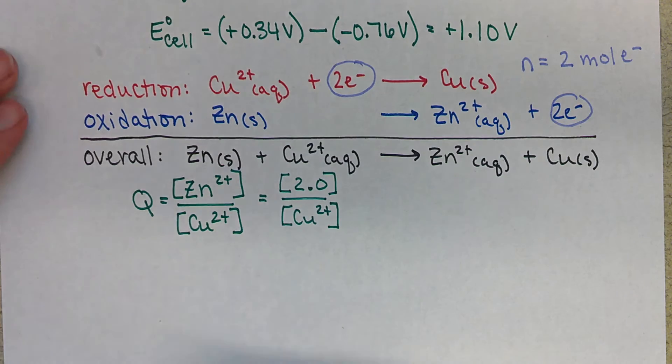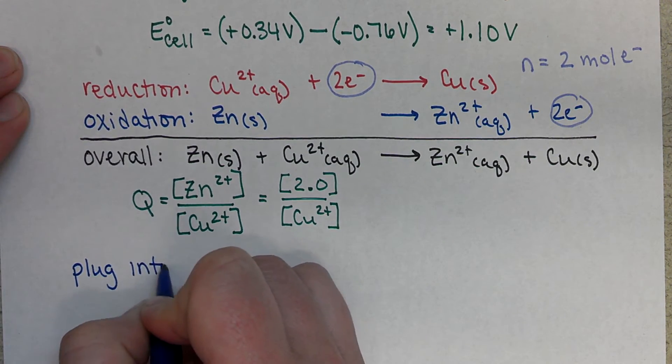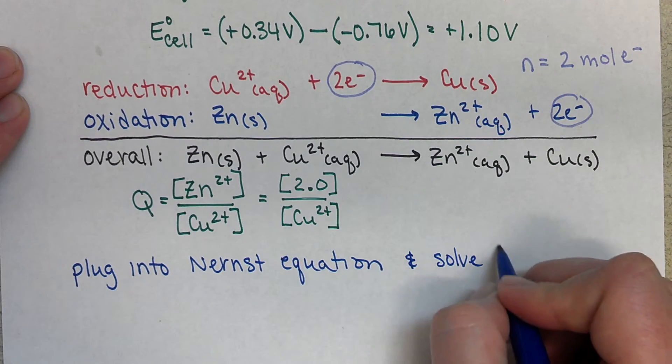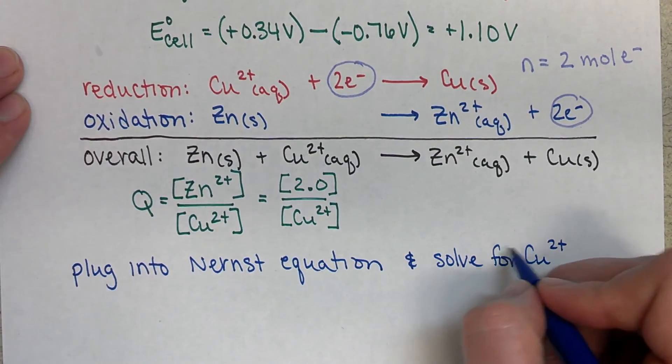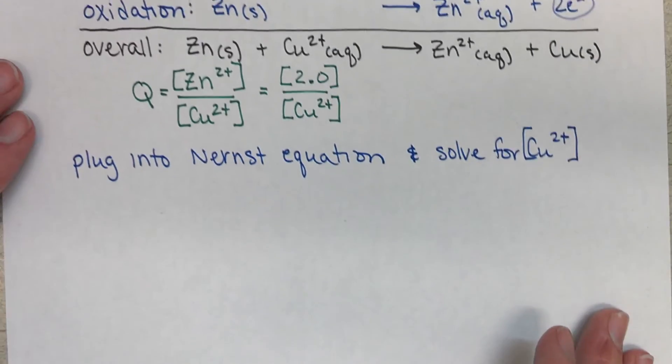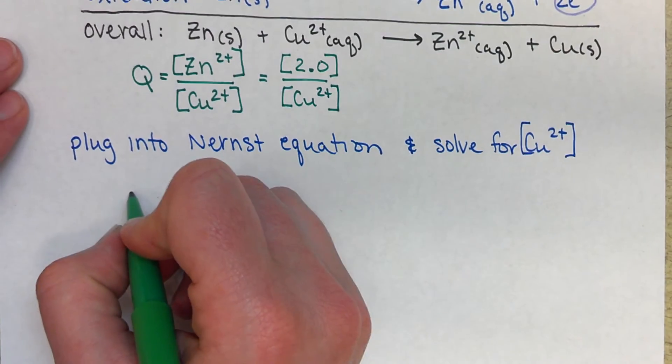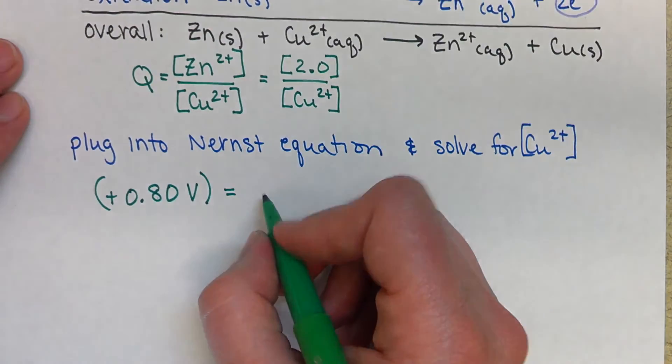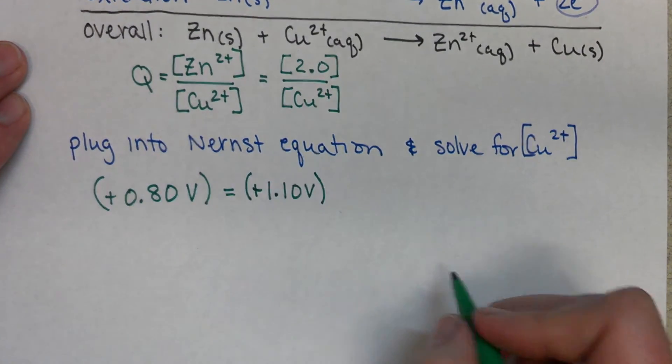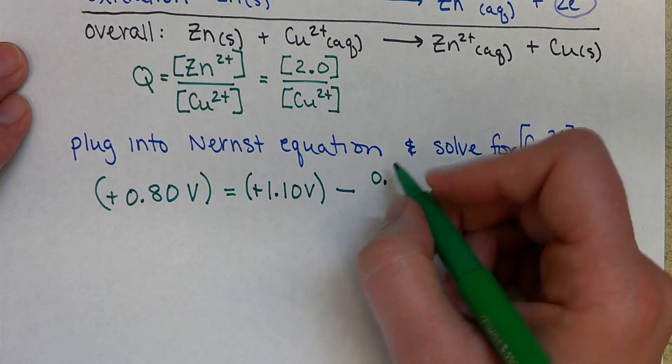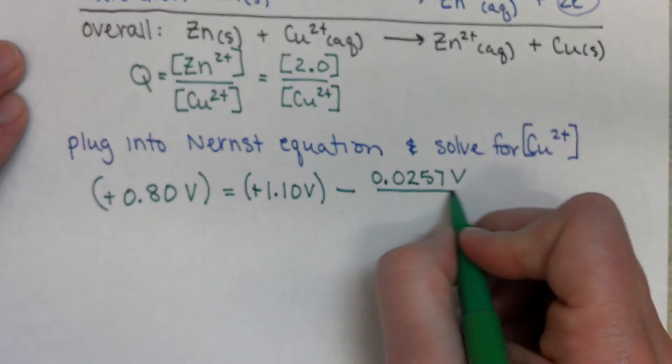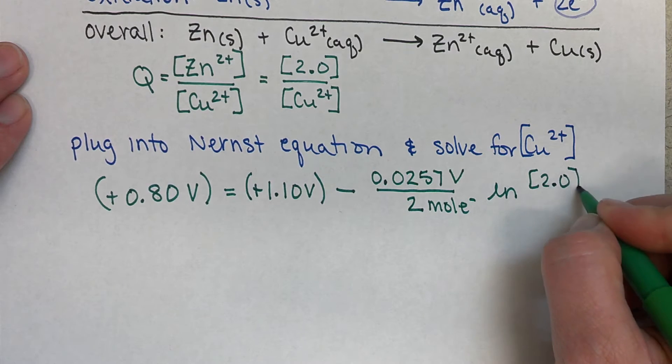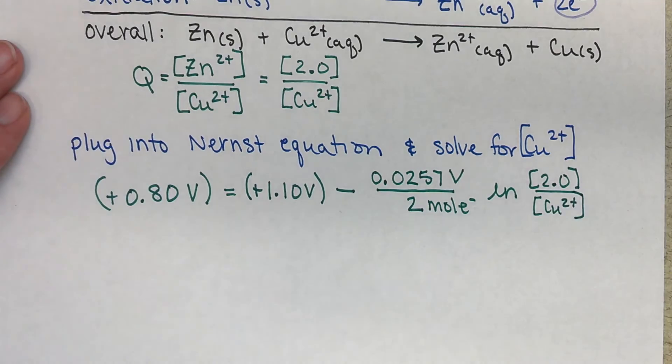So now what we want to do is we want to basically plug everything into our Nernst equation, and we're going to solve for the copper ion concentration. So we have our 0.80 volts, and that's a positive value. That's equal to our E cell standard. So we have a positive 1.10 volts minus 0.0257 volts divided by two times the natural log of 2.0 divided by copper two plus.